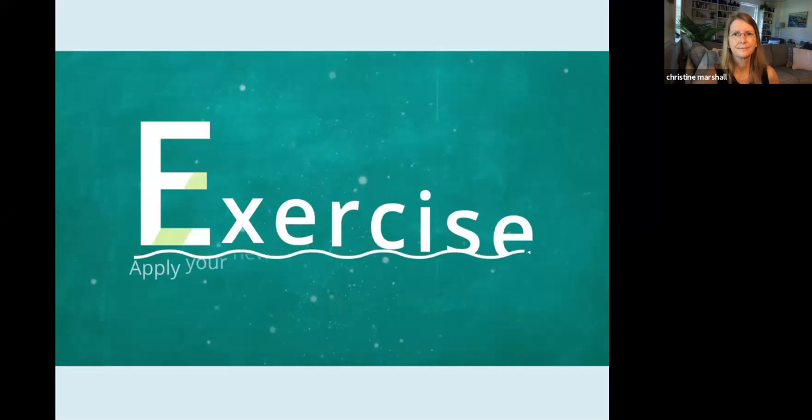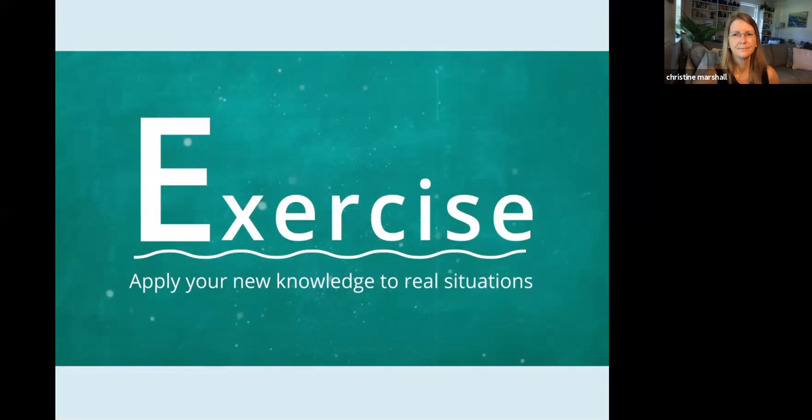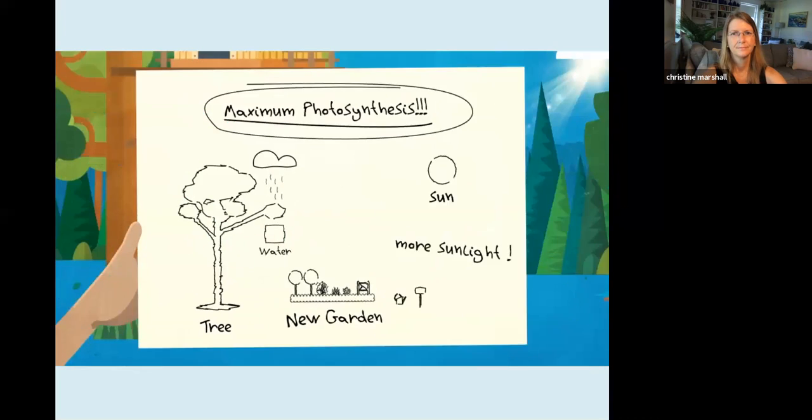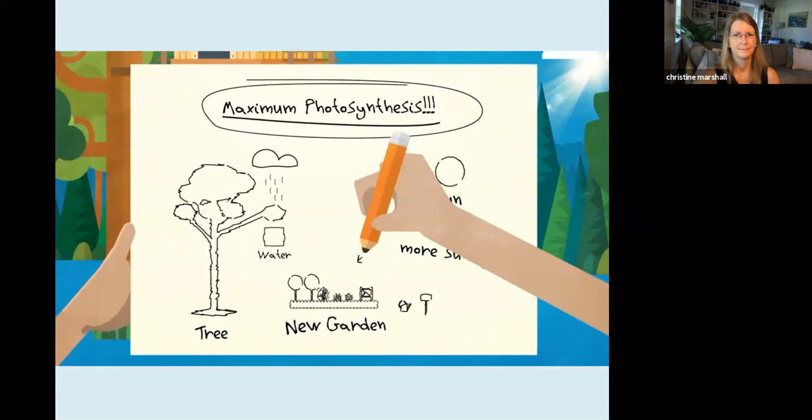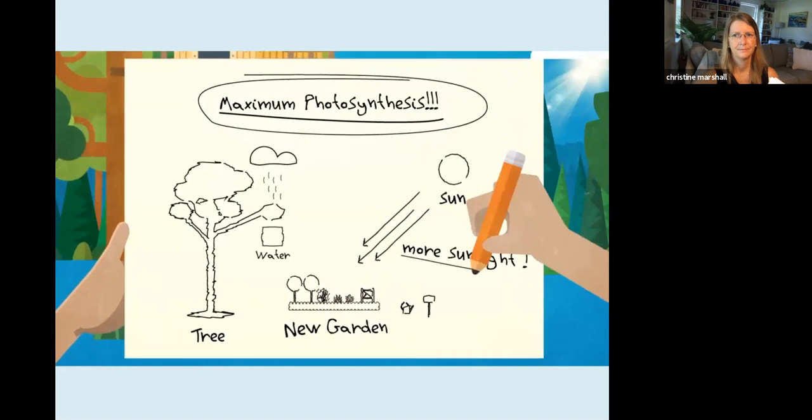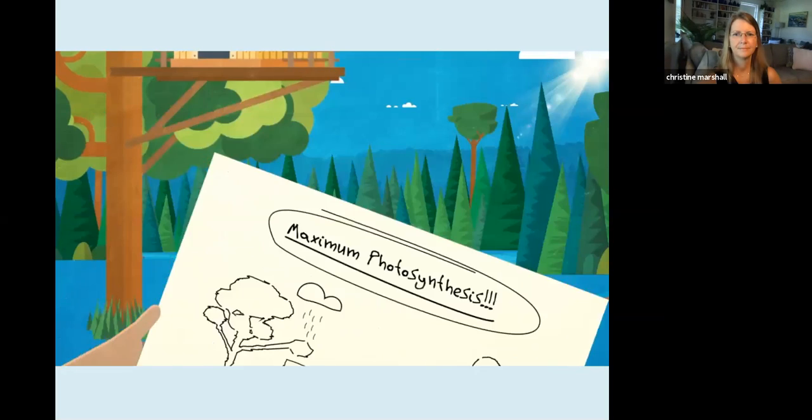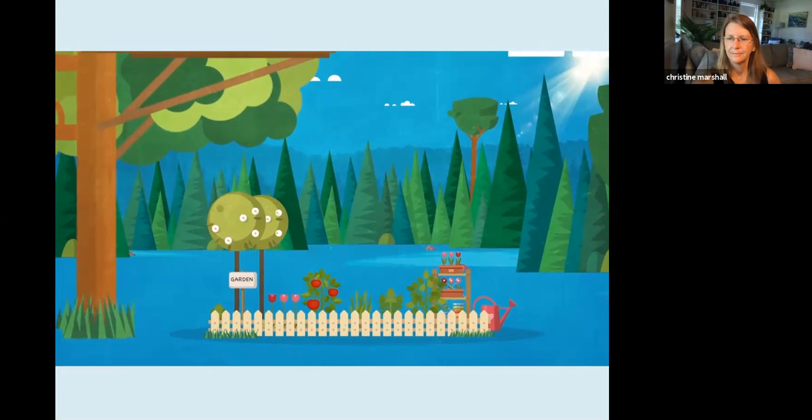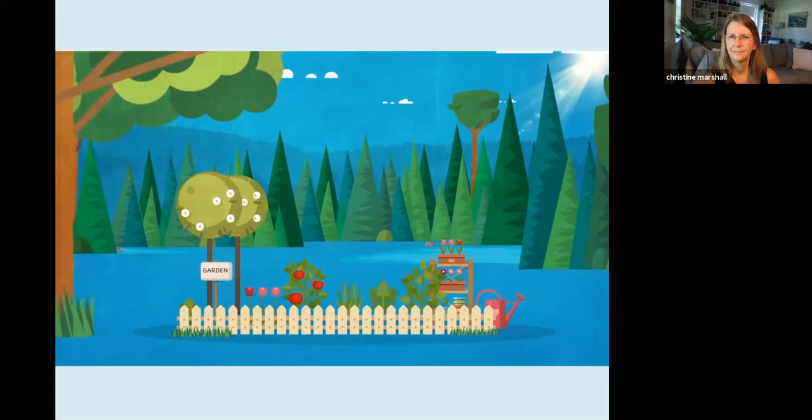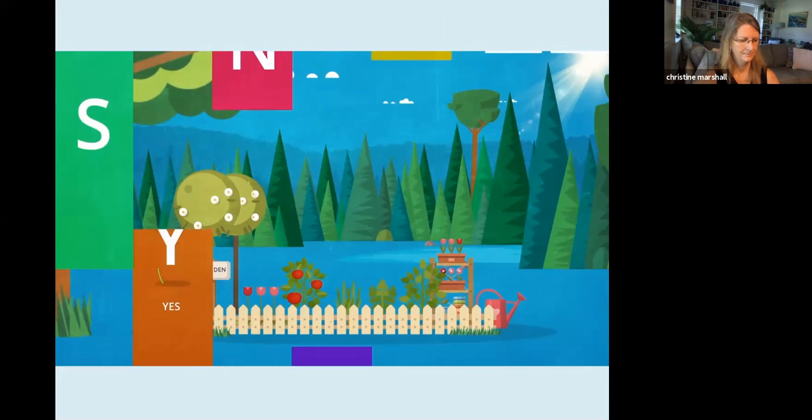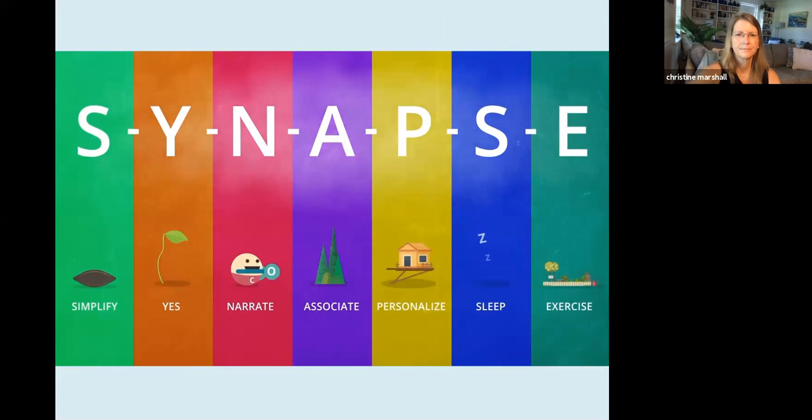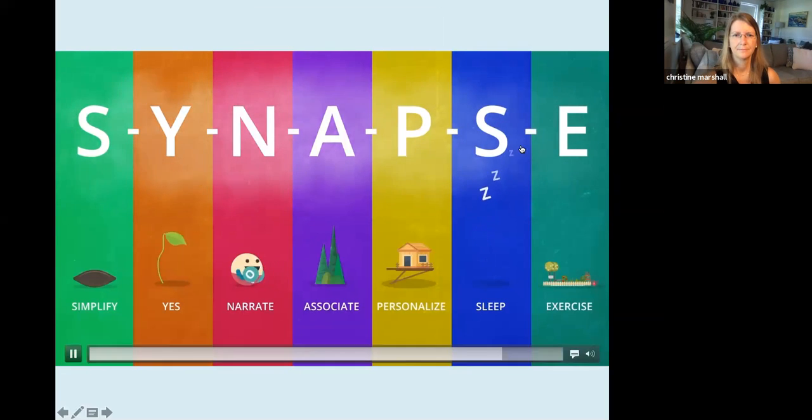Exercise. Apply your new knowledge to real situations. Look for opportunities to retrieve and use what you've learned in your everyday life. Practice drawing, mapping, and storytelling to strengthen your understanding and memory. Synapse. These seven strategies will help you learn and remember information in a fun and effective way. You have a whole life of learning ahead of you, so lean into scientific learning with Synapse.